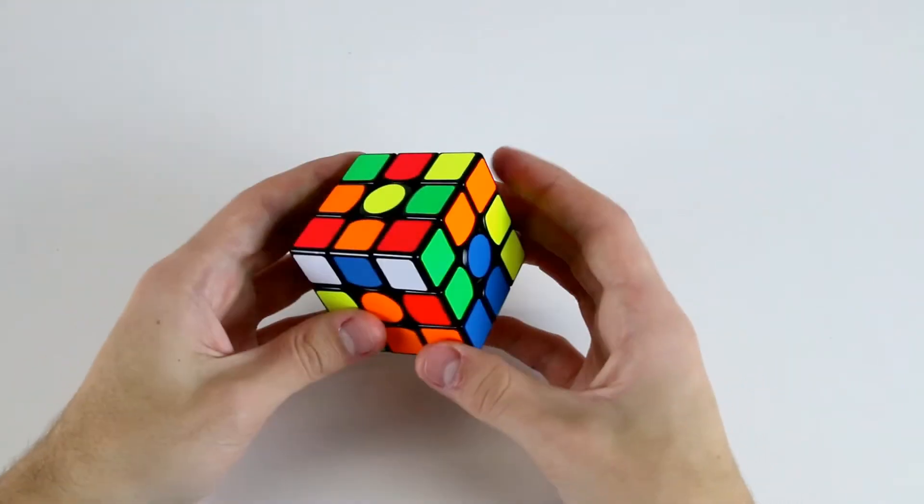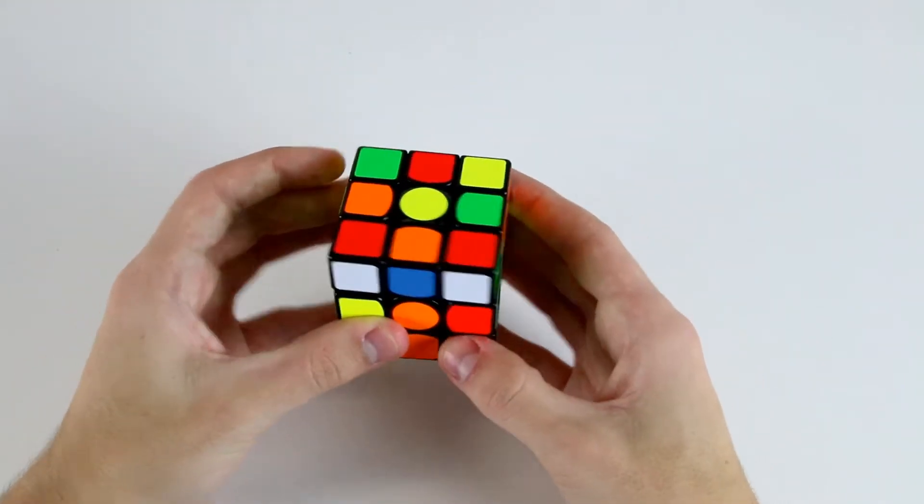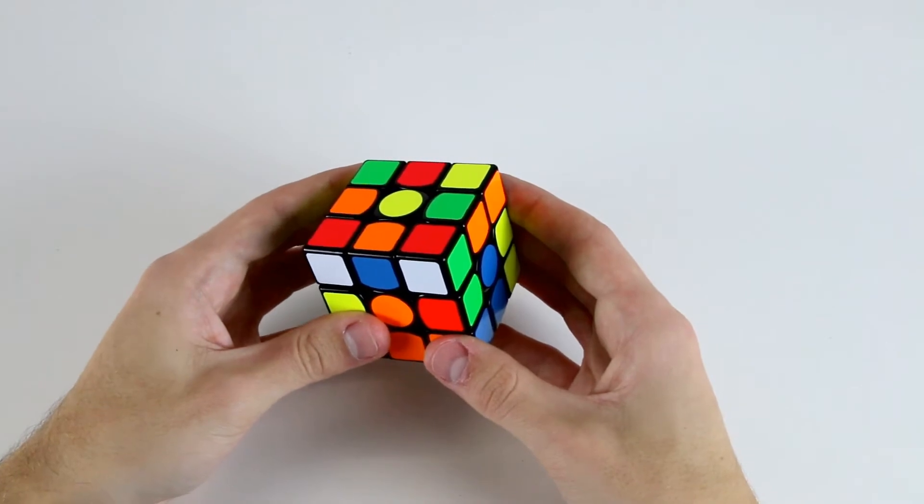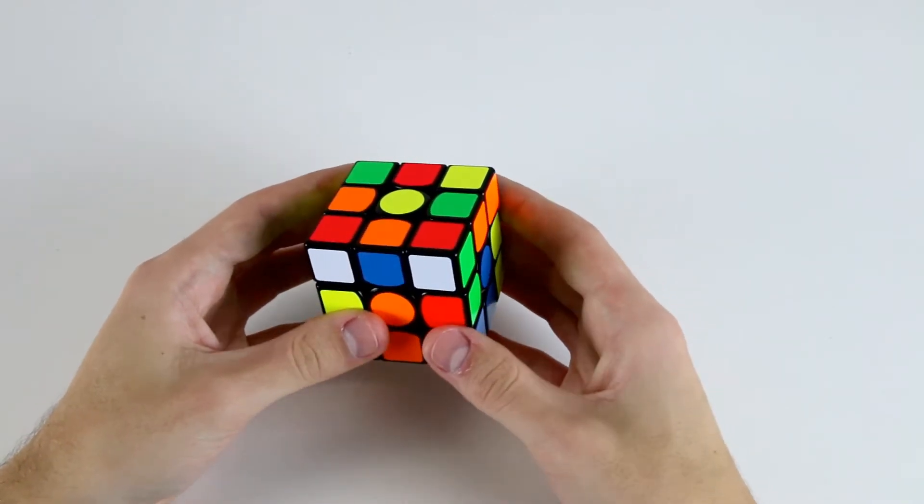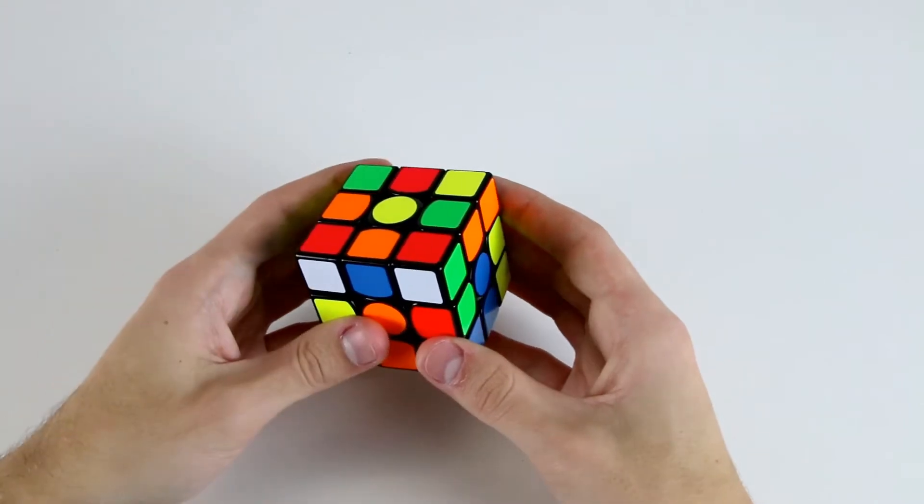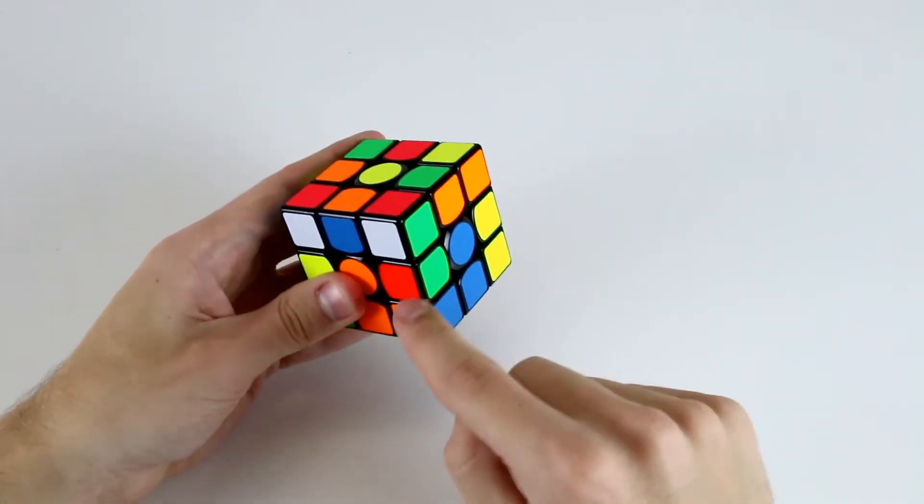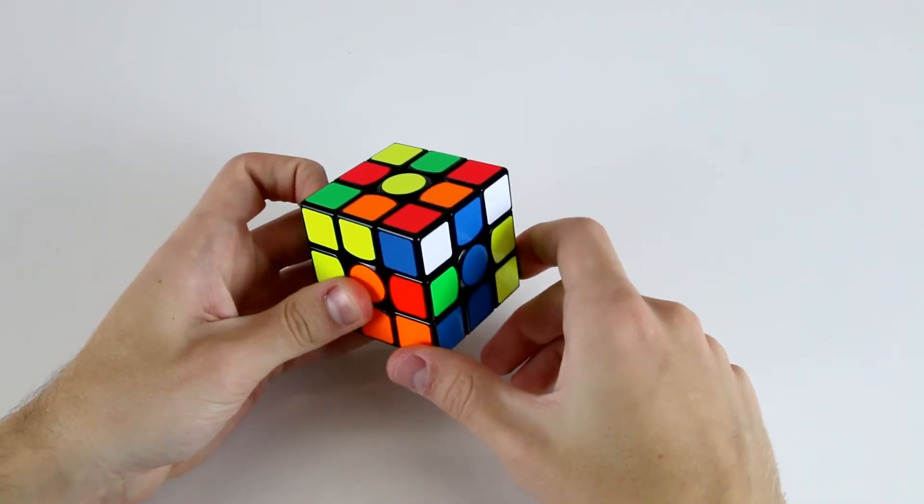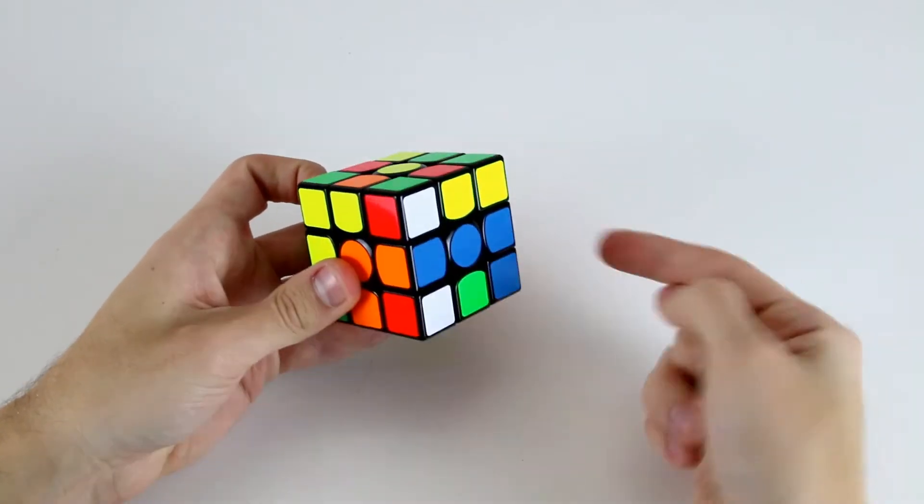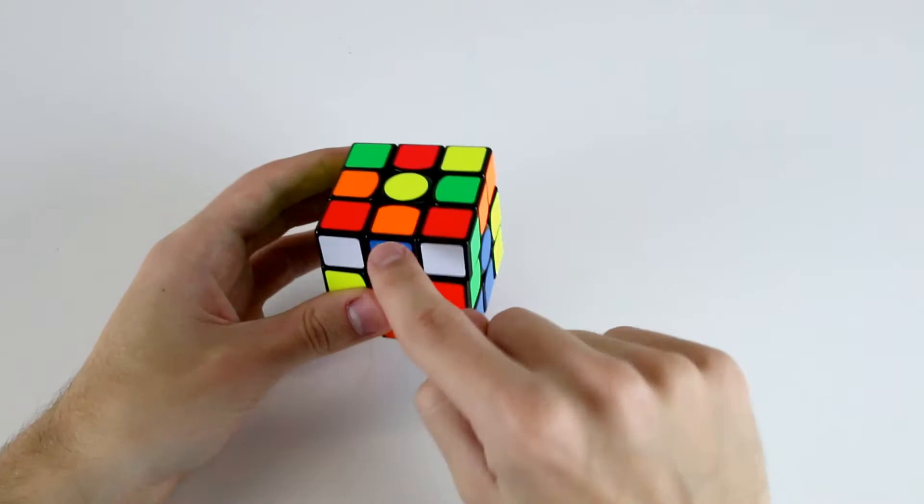Let's say we've done the cross here. If we can insert an F2L edge into its correct slot in its correct orientation using only U, L and R moves, then the edge is considered oriented. Here we've got this blue and orange edge which belongs down here, so we can just do a U' R' and that inserts this edge correctly. So this edge is oriented.